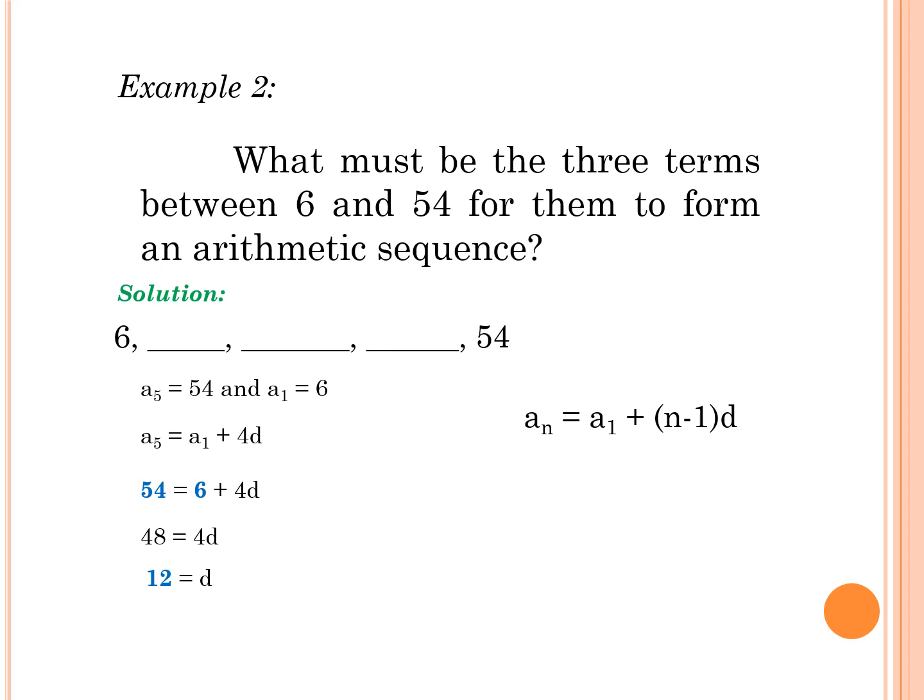Since our d is equal to 12, that is the number to be added from the first term. So 6 plus 12 is 18 plus 12, 30 plus 12, 42 plus 12. Here, we have the last term, 54. So we complete the sequence now. What are the three terms or three arithmetic means? The three terms are 18, 30, and 42.